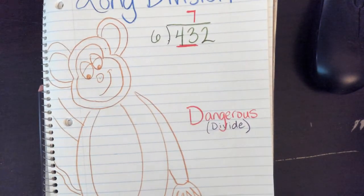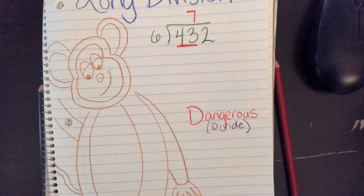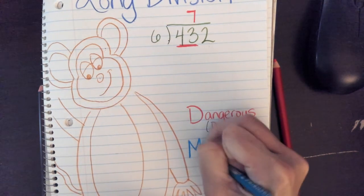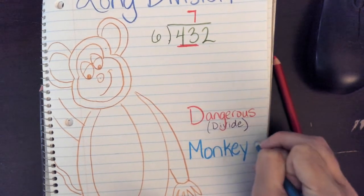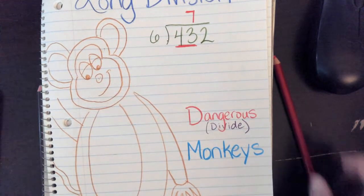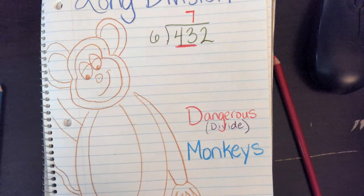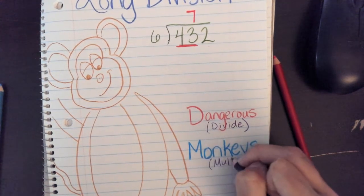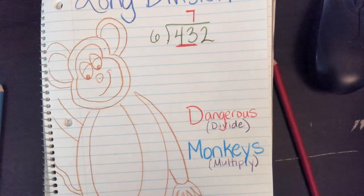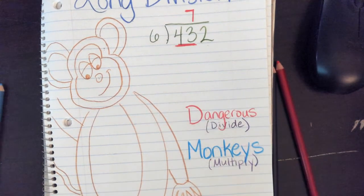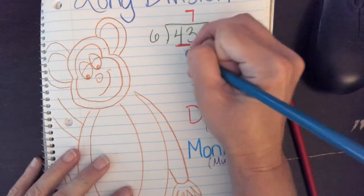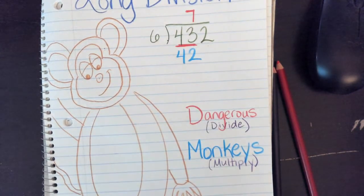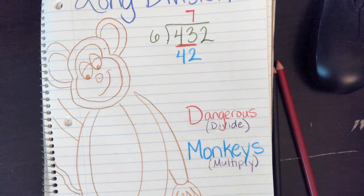This dangerous monkey has friends — there's a whole troop of them. Dangerous monkeys. The M in 'monkeys' tells me to multiply. So my second step, once I've divided — I've put 6 into 43 — now 7 times 6 is 42. I divided, I asked myself how many times 6 goes into 43, and now I've multiplied.